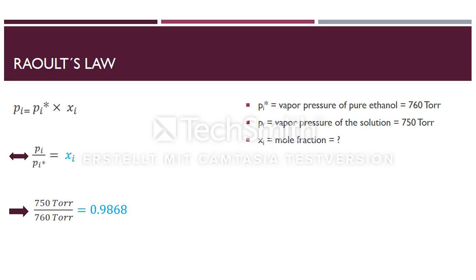After that we have to use Raoult's law to calculate the mole fraction of our solvent. The law states that the partial pressure of a solution is equal to the vapor pressure of the pure component multiplied by its mole fraction in the mixture. Now we just have to convert this formula to the mole fraction and insert our information from the right side. We get the result of 0.9868 for the mole fraction.